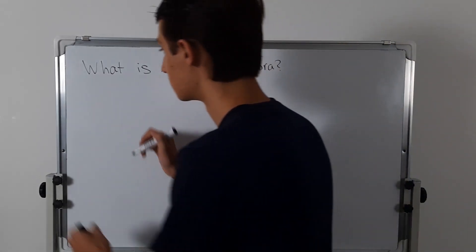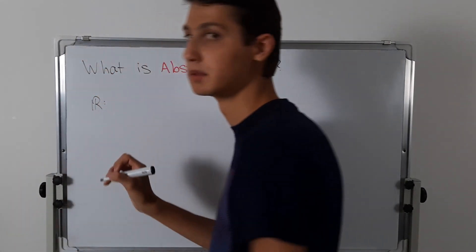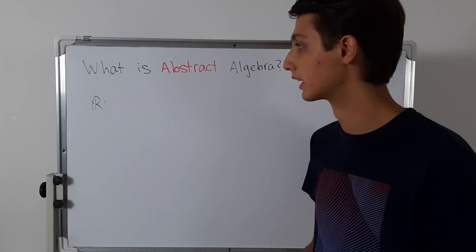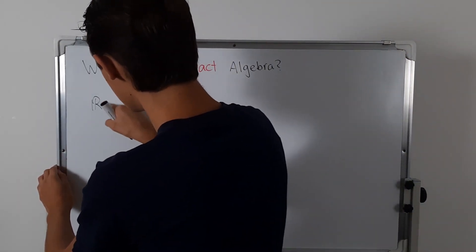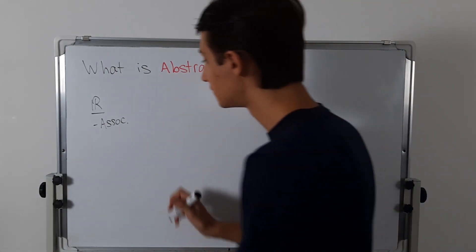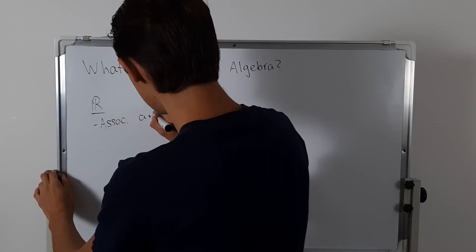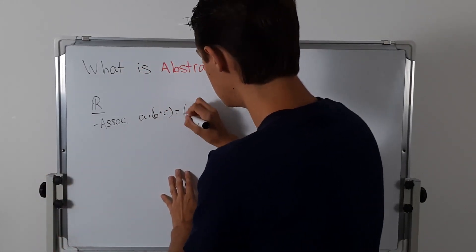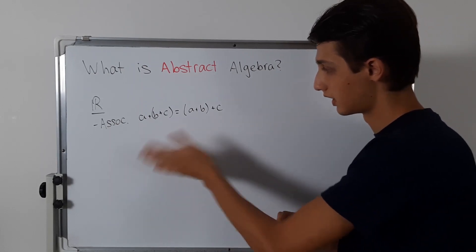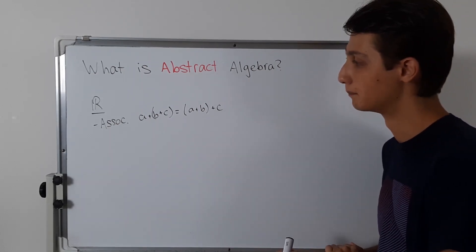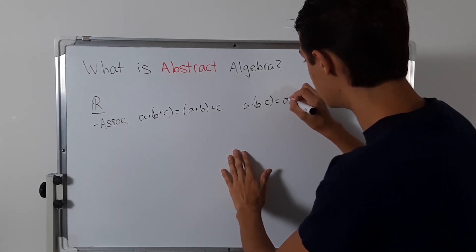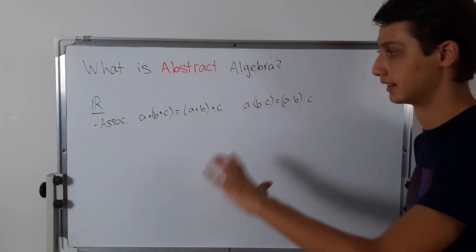The real numbers have certain properties that you've probably seen in high school algebra or calculus. Real numbers are denoted by a double-stroke R. One property is associativity — the associative property tells us that (a + b) + c equals a + (b + c), so we can put parentheses anywhere and it doesn't matter. This is also true for multiplication. Essentially, it doesn't matter the order in which you perform the operations.